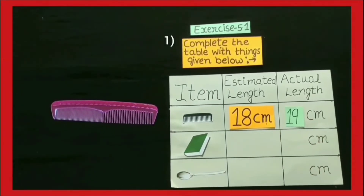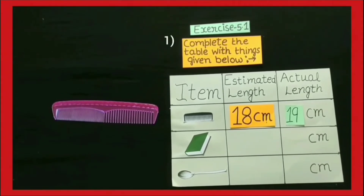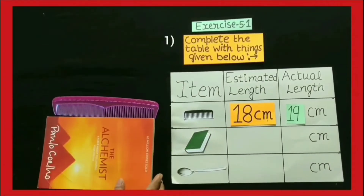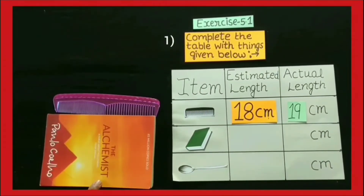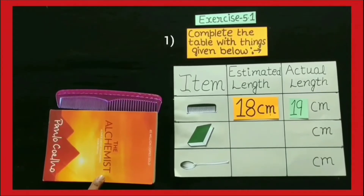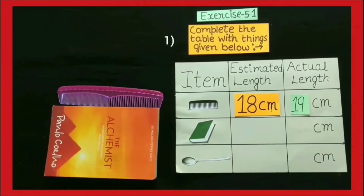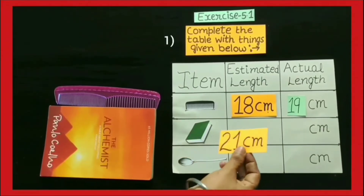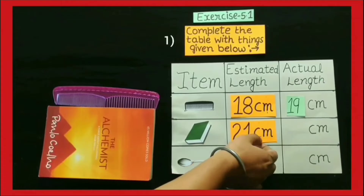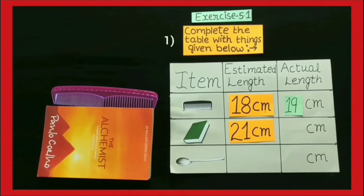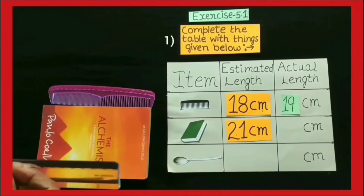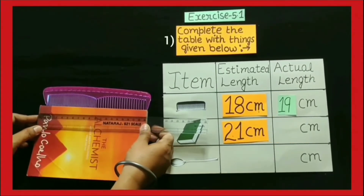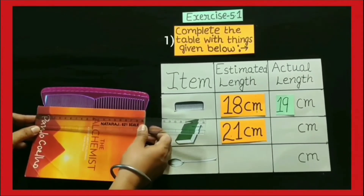Now students, the second thing is book. Observe this book and estimate its length. Its estimated length can be approximately 21 cm. To find out the actual length of the book, we have to measure the book with the help of a scale. Its actual length is 20 cm.